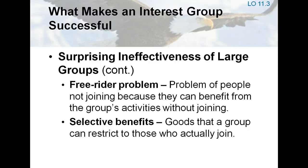The primary way for large potential groups to overcome Olson's Law is to provide attractive benefits for only those who join the organization. Selective benefits are goods that a group can redirect to those who pay their yearly dues, such as information publications, travel discounts, and group insurance rates.